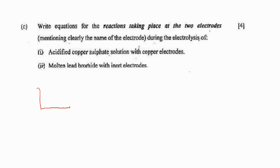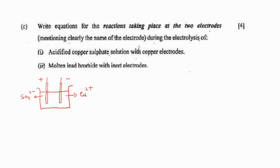Whenever you are getting this kind of question, draw an electrolytic cell. This is the electrolyte, this will be the cathode, and the positive electrode is known as the anode. The electrolyte is copper sulfate solution. First, write what all ions are present in the solution: Cu²⁺ ion, SO₄²⁻ ion, and as it is an aqueous solution, H⁺ ion and OH⁻ ion will also be present. What will be the reaction taking place at the cathode?